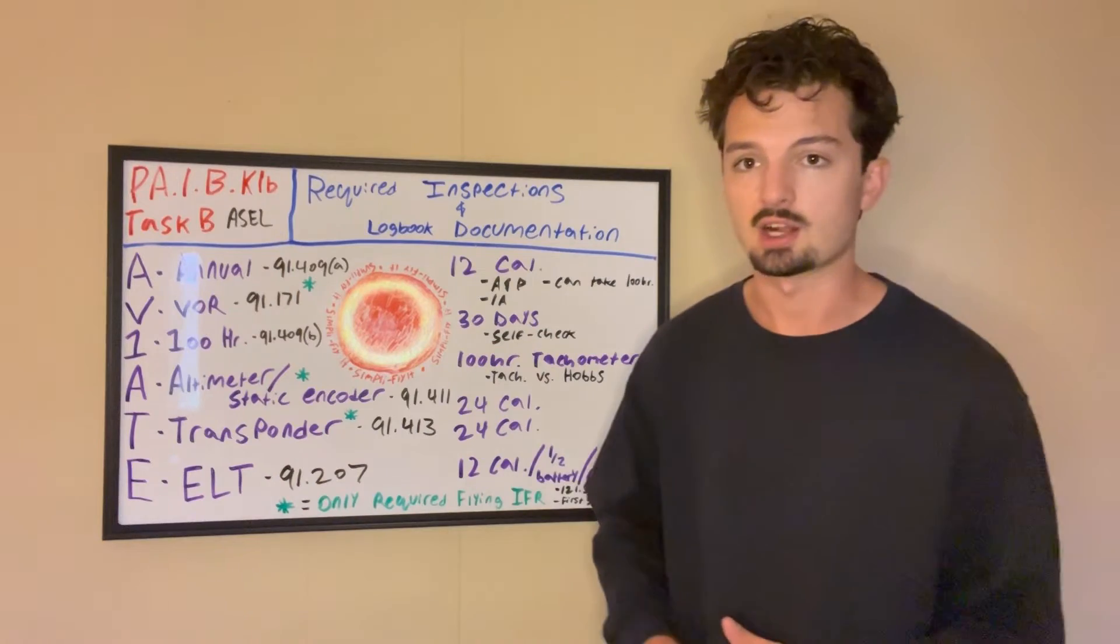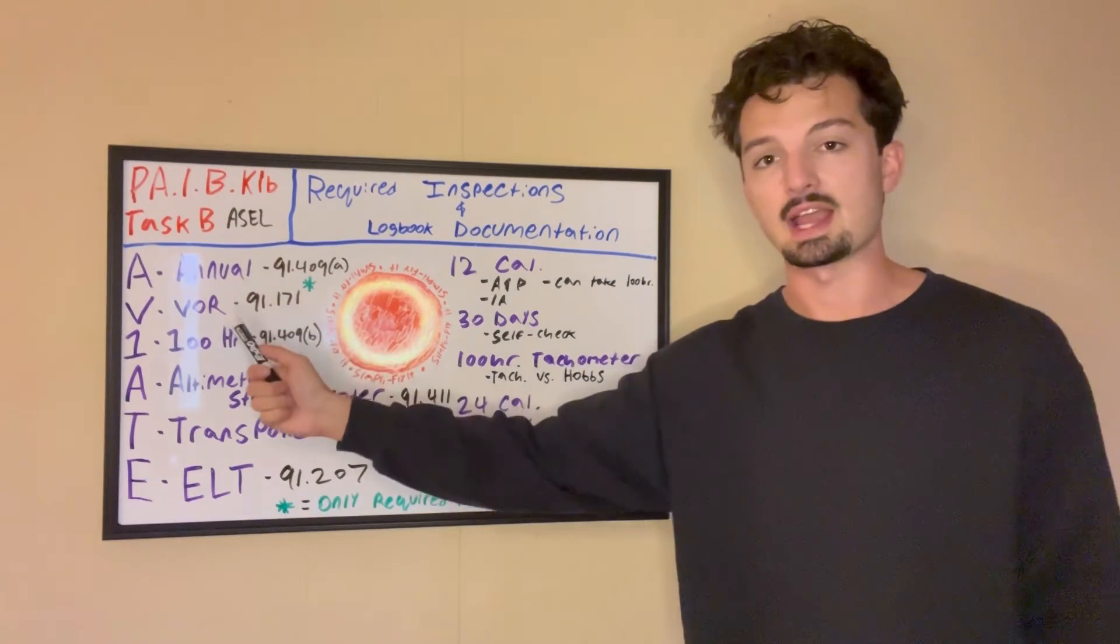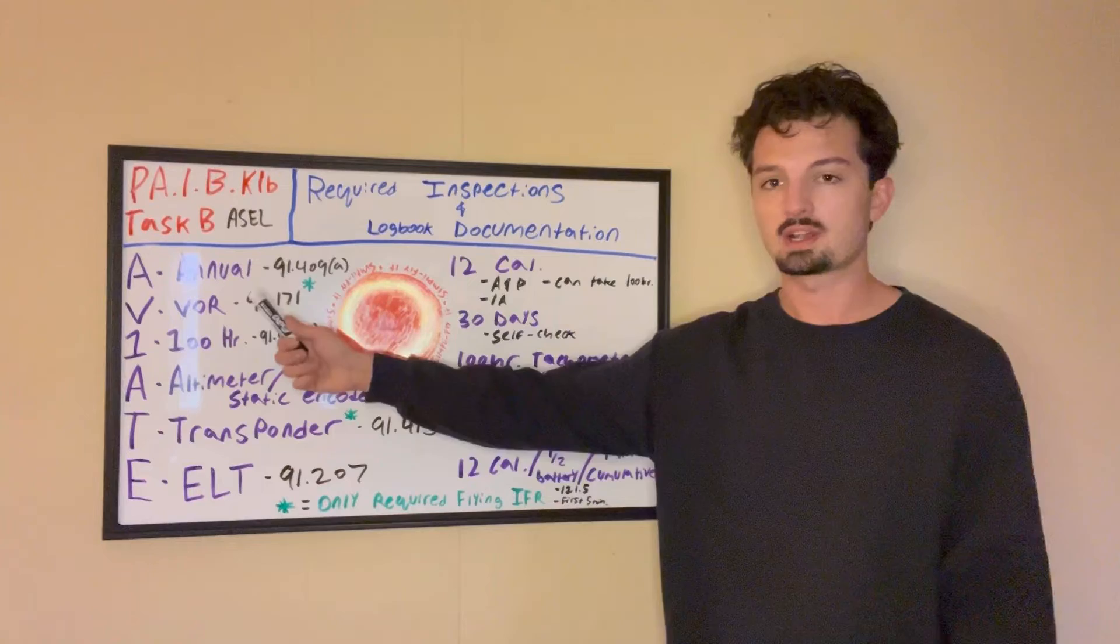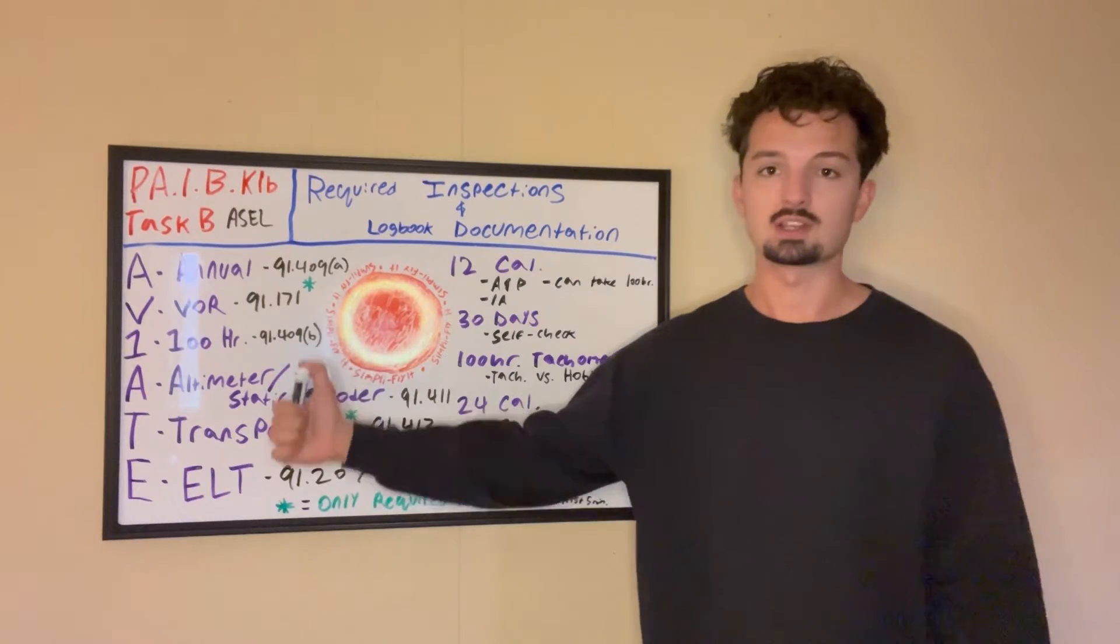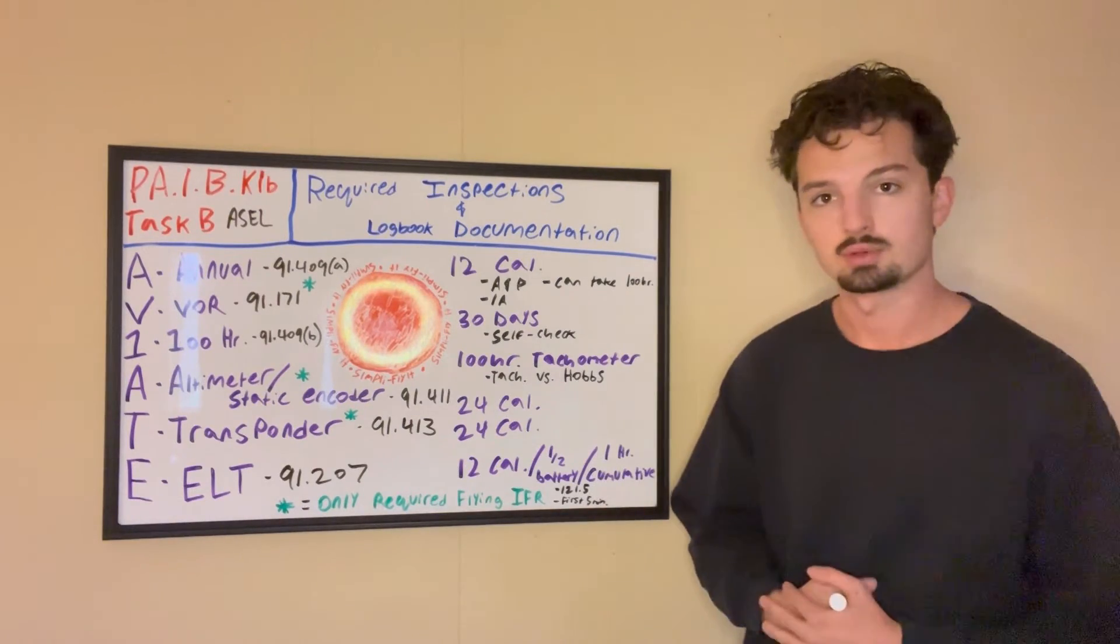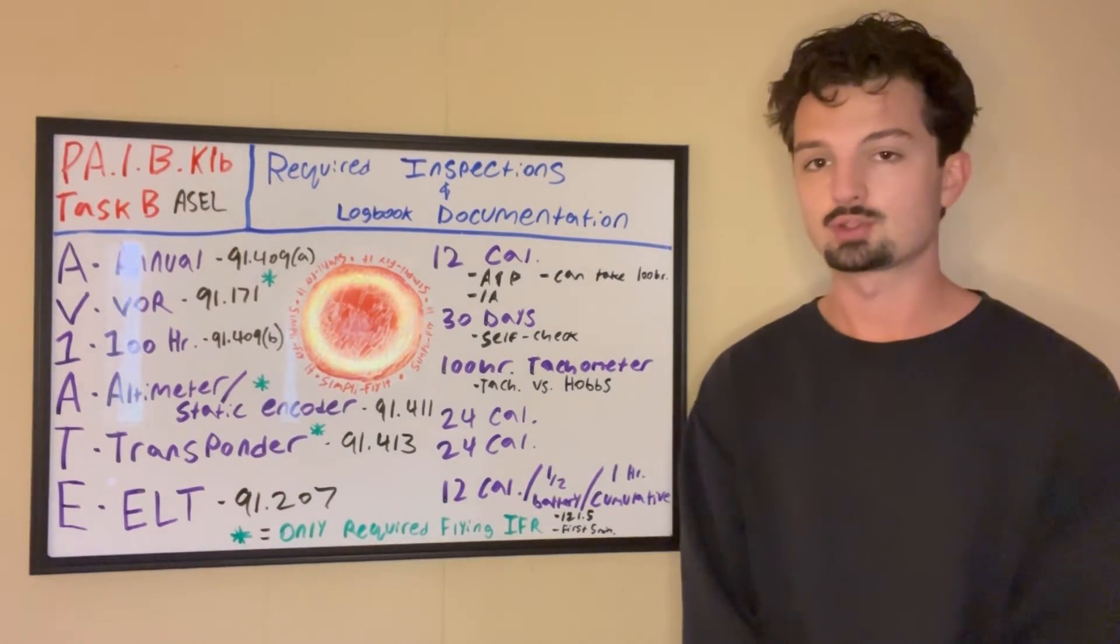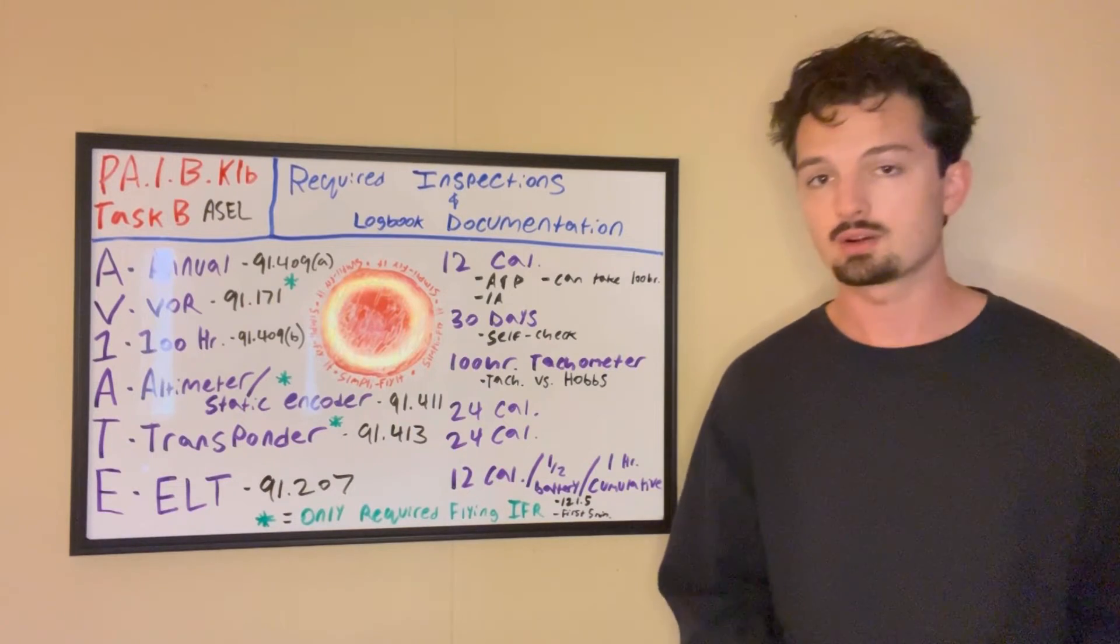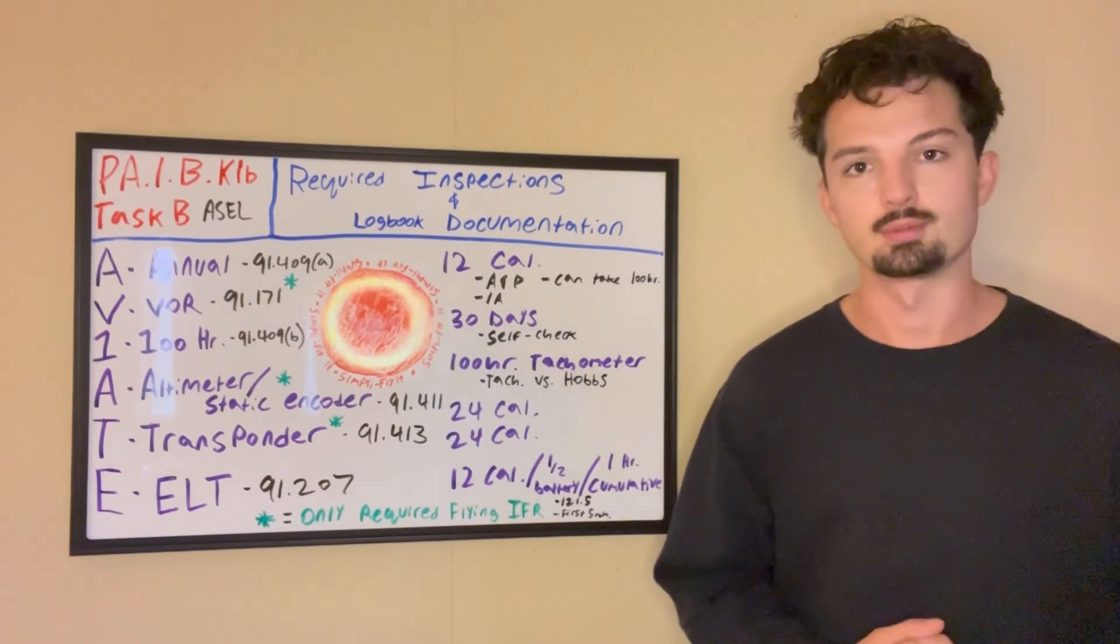Quick review before I erase this and we talk about the documentation part. We've got our annual inspection every 12 calendar months, has to be signed off by an AMP with an IA. The annual inspection can take place of the 100 hour, but the 100 hour cannot take place of the annual inspection. Your VOR inspection, you only need it every 30 days and you only need it for instrument flight rules and you can check it yourself. Your 100 hour inspection, inspected every 100 hours of tachometer time, and it's only needed if the plane is for hire. And an AMP can perform a 100 hour inspection without an IA. Your altimeter slash static encoder system, every 24 calendar months. Your transponder, every 24 calendar months. And your ELT inspection, every 12 calendar months or half the battery life or an hour of cumulative use.